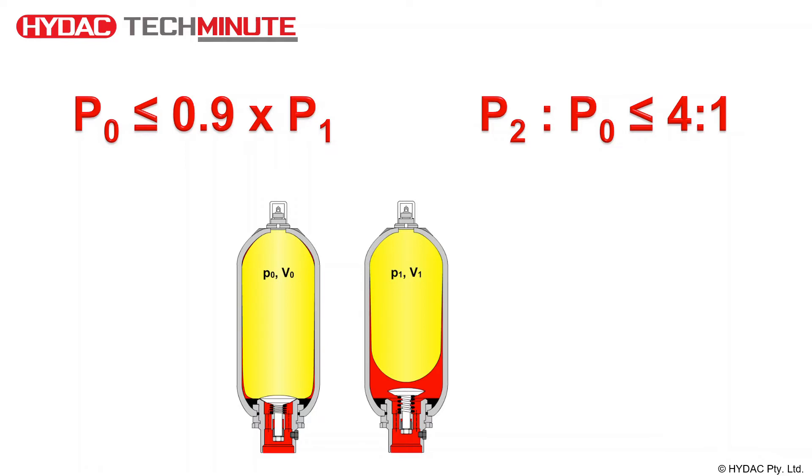The equation on the right tells us that the maximum permitted pressure, P2, cannot be greater than 4 times the pre-charge pressure. This is also known as the pressure ratio.